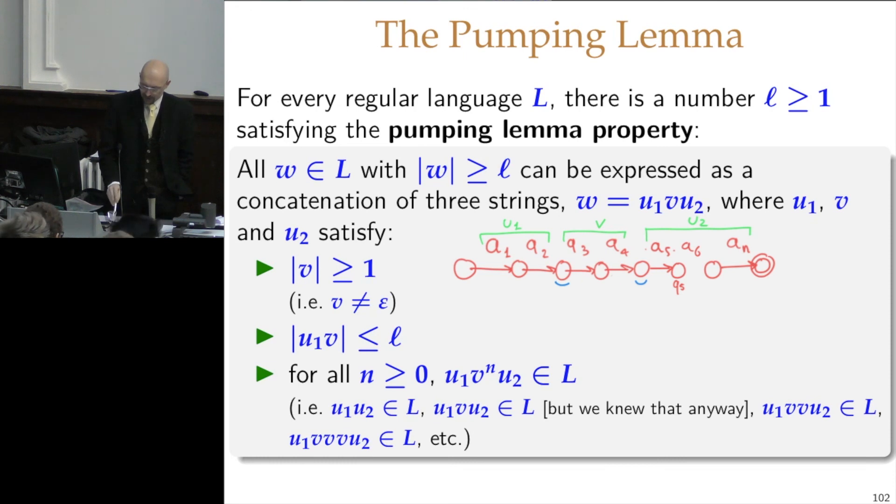However many times I do this, once I then restart getting an a₅, I will follow this path anyway. And so it's completely irrelevant to the acceptability of the strings how many times I do v, including no times. And so this is the proof of this interesting property.